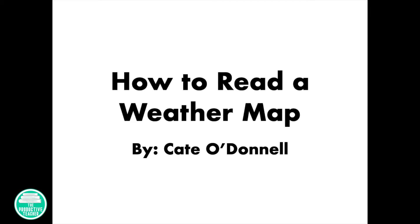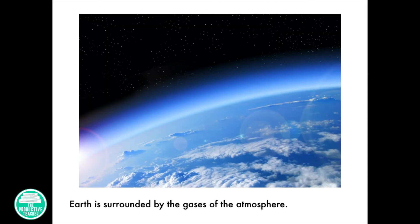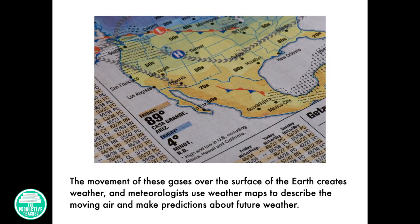How to Read a Weather Map by Kate O'Donnell. Earth is surrounded by the gases of the atmosphere. The movement of these gases over the surface of the Earth creates weather, and meteorologists use weather maps to describe the moving air and make predictions about future weather.